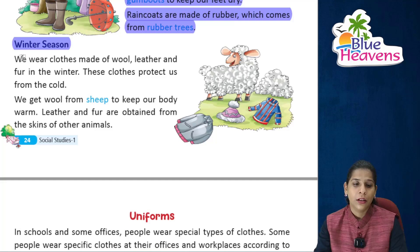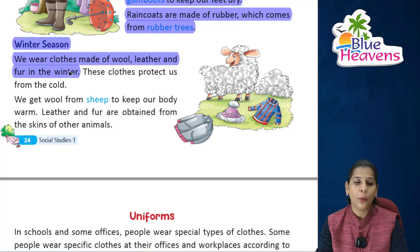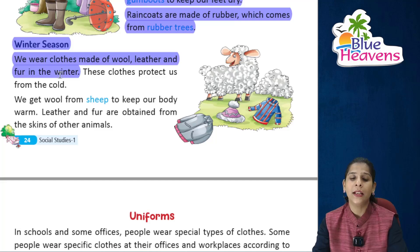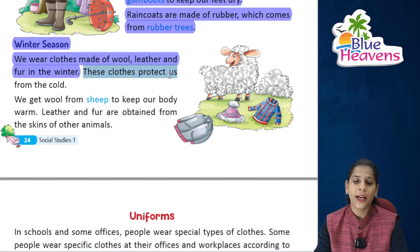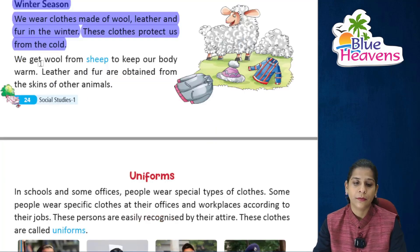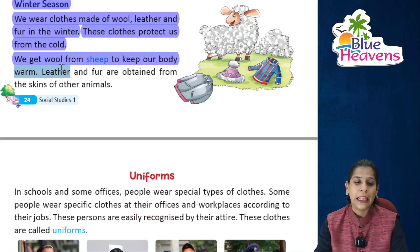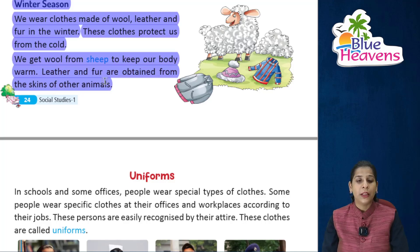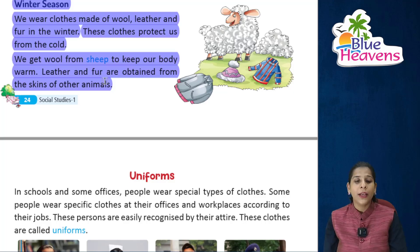In the winter season, we wear clothes made of wool, leather, and fur. These clothes protect us from the cold. We get wool from sheep, which keeps our body warm. Leather and fur are obtained from the skins of other animals.